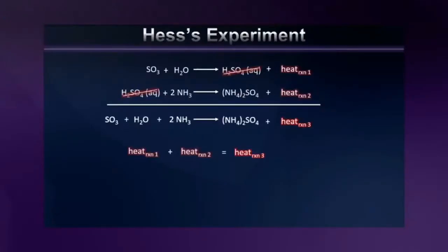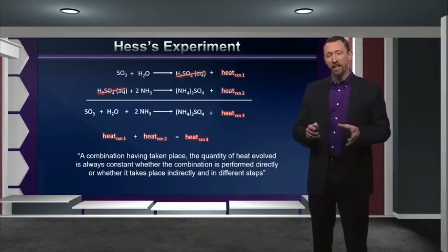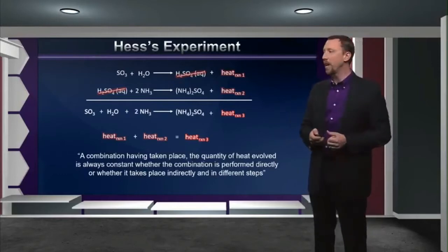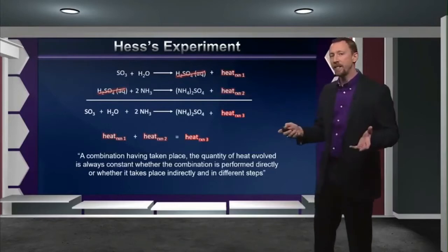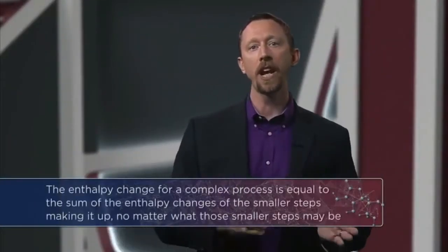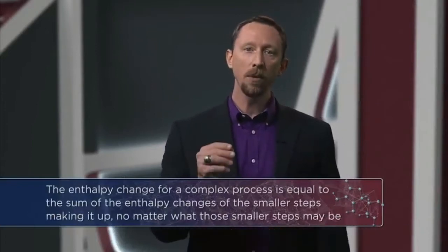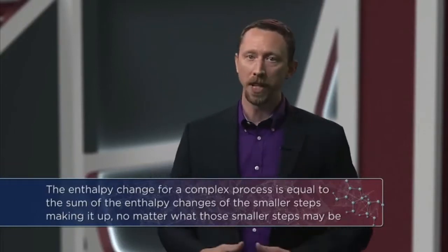The heat released when forming sulfuric acid from sulfur trioxide and then forming ammonium sulfate from sulfuric acid and ammonia was exactly equal to the amount of heat released when the whole thing happened all at once. This prompted Hess to write that in a combination taking place, the quantity of heat evolved is always constant, whether the combination is performed directly or whether it takes place indirectly and in different steps. This famous experiment was basically the genesis of thermodynamics — it was when it was finally realized that heat is heat and it adds up. Hess's law states that the enthalpy change for a complex process is equal to the sum of the enthalpy changes of smaller steps making it up, no matter what those smaller steps may be.